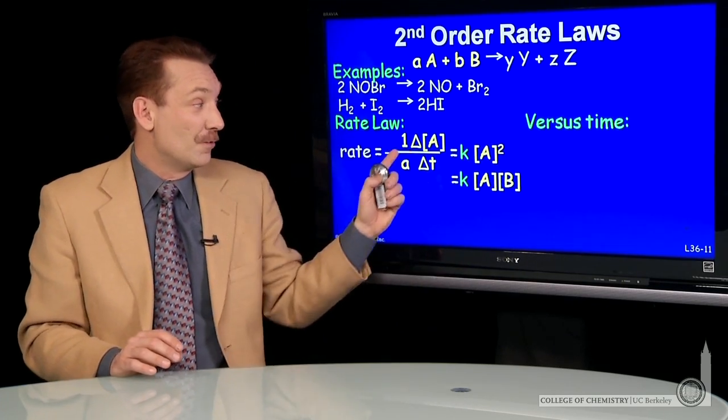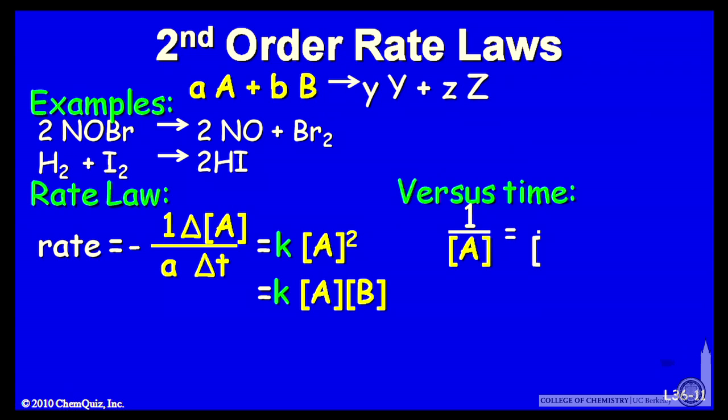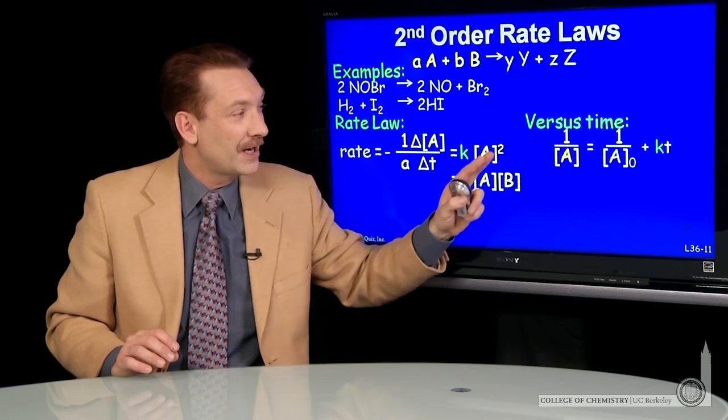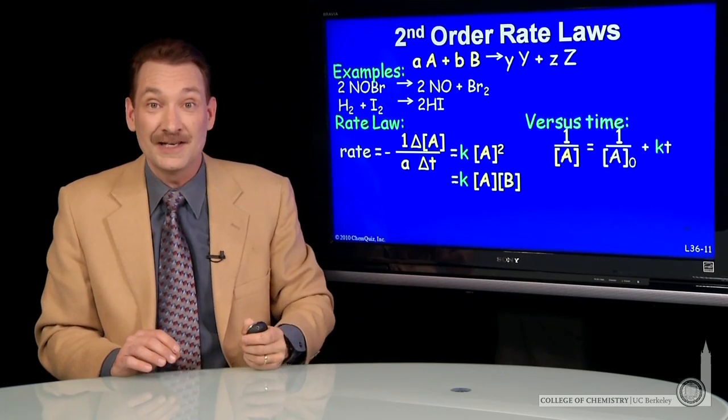If you write that rate law versus time, it looks like this. 1 over the A concentration is given by 1 over the initial concentration plus kT. So a plot of 1 over concentration versus time is linear.